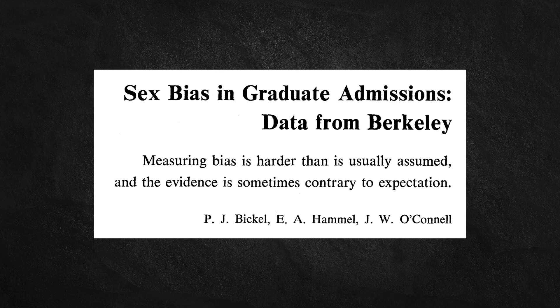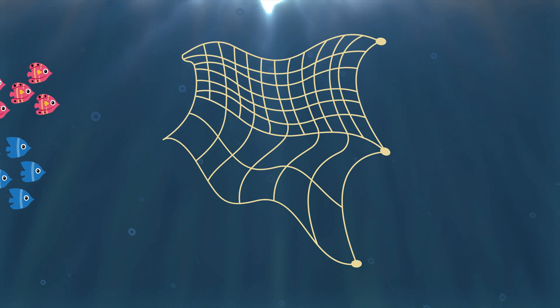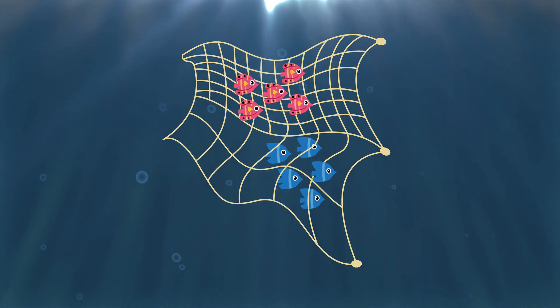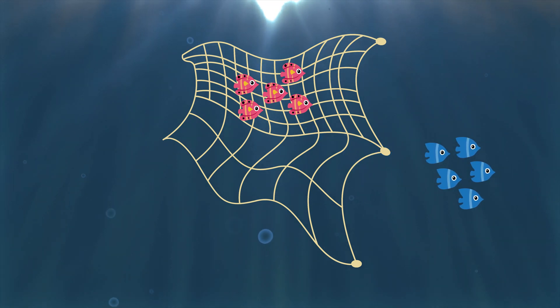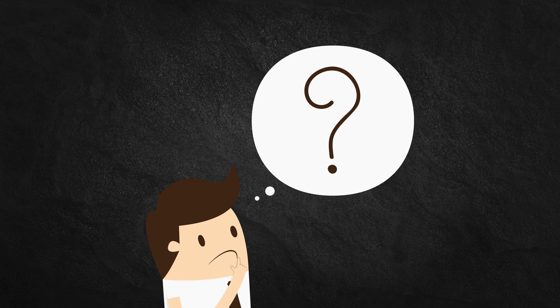Let me conclude with an analogy from the original paper on this UC Berkeley sex bias case. Picture a fishnet with two different mesh sizes. A school of fish, all of identical size, swim toward the net and seek to pass. The female fish all try to get through the small mesh, while the male fish all try to get through the large mesh. On the other side of the net, all the fish are male — the mesh did not discriminate. The reason for the disproportionate result was that the fish were not homogeneously distributed. Simpson's paradox is a veridical paradox: it produces a result that at first appears absurd, but is demonstrated to be true nonetheless. It is a useful reminder that data are not always objective, so we must always ask ourselves if we are getting the complete story.